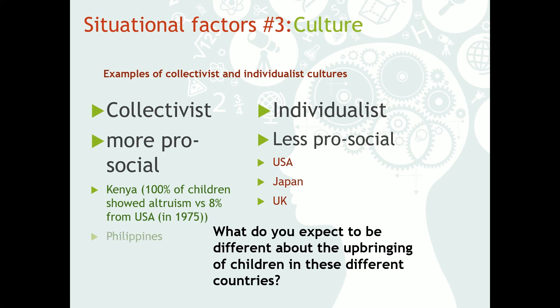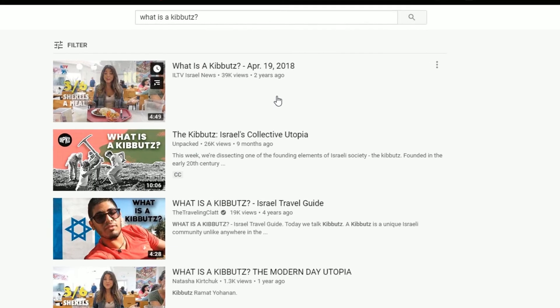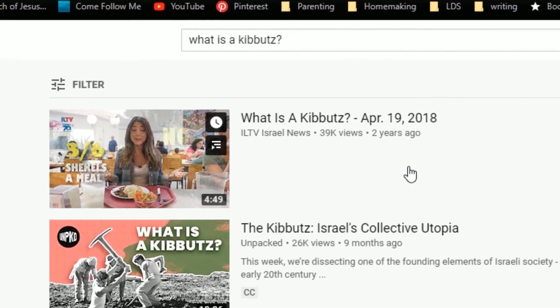Other countries with strong collectivist cultures include Kenya and the Philippines. Another example that's really useful to know about are kibbutz communities. Kibbutz communities exist pretty much only in Israel, and they are predominantly Jewish communities. They're really fascinating to look at, and to help you get your head around what an ideal collectivist community looks like, I'm going to send you to a video you can watch. It's not very long, but it does a great job at showing you what a collectivist culture looks like and how well it can work. Follow that link to see it.